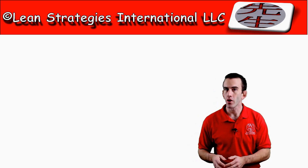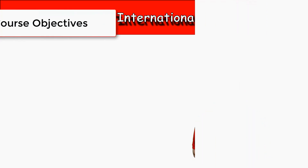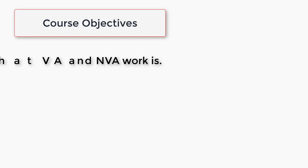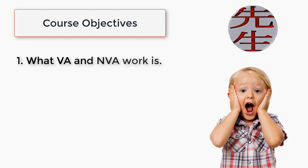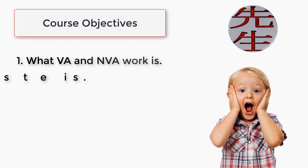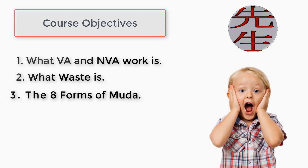In this first lecture, you will learn what value-added and non-value-added work is. After we understand those two types of work, we will discuss what waste is, and finally, we will touch on each of the 8 forms of waste so that later on we can focus on how each of these forms of waste can be removed.